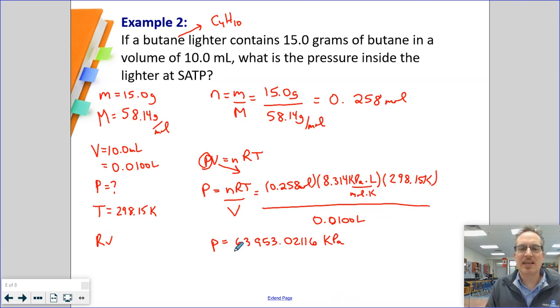I'm only allowed 3 sig figs. So I can either write this as 6.40 times 10 to the 4 kilopascals, or I can move it and divide by 1,000 and say that we have 64.0 megapascals. I think I would assume that most people would do it in kilopascals because we've never heard of megapascals.